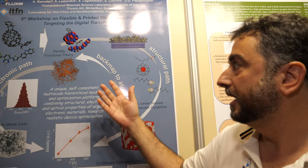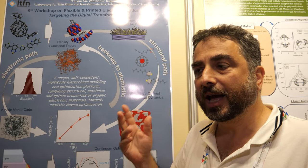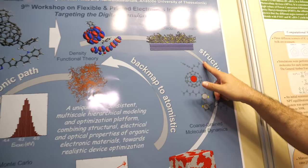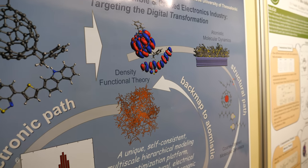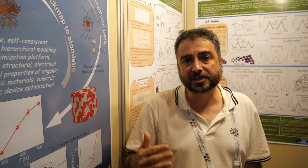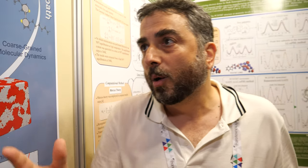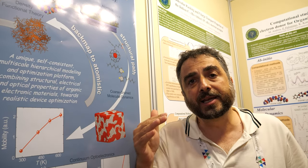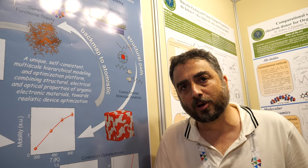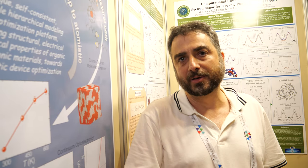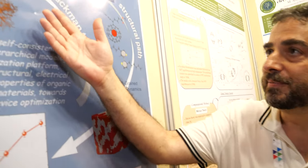If you want to simulate everything, you need to do quantum mechanics at two levels. One is the structural level — you do quantum mechanics to understand how the molecules interact with each other to form the structure, how they come and blend together. When you find the structure, you go back and study the electronics — how the electrons behave from molecule to molecule. So there are two levels of quantum mechanical calculations.